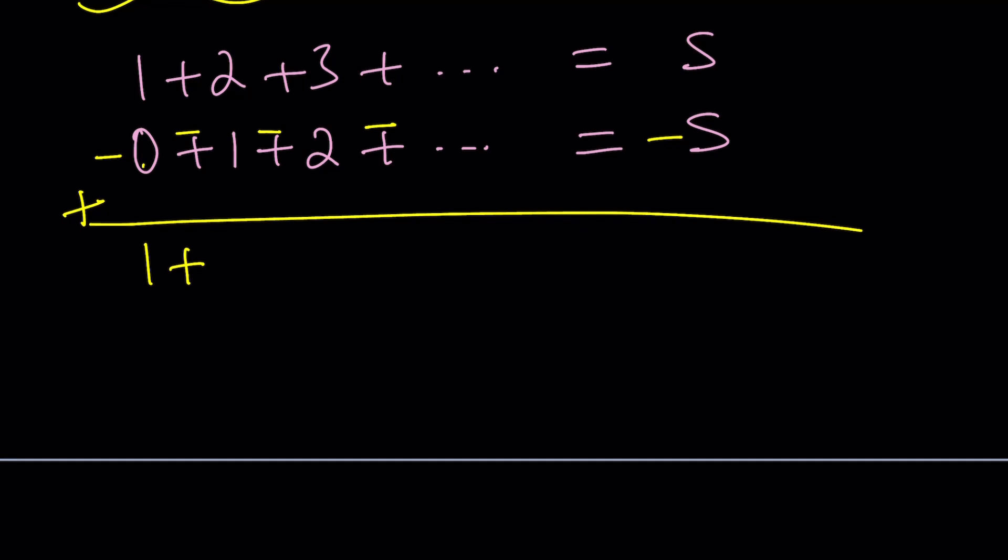3 minus 2 is 1, and so on and so forth. These are all positive differences. And S minus S is equal to 0, as far as we know. Okay, great.